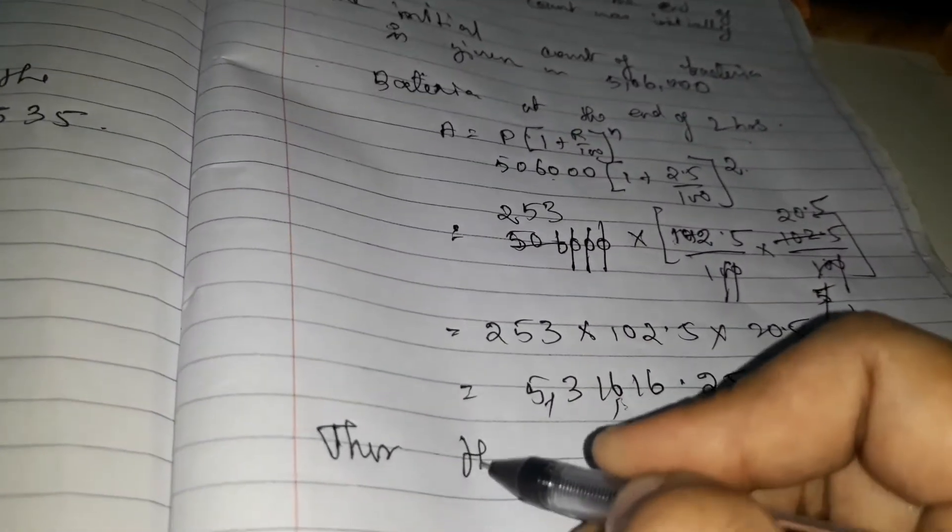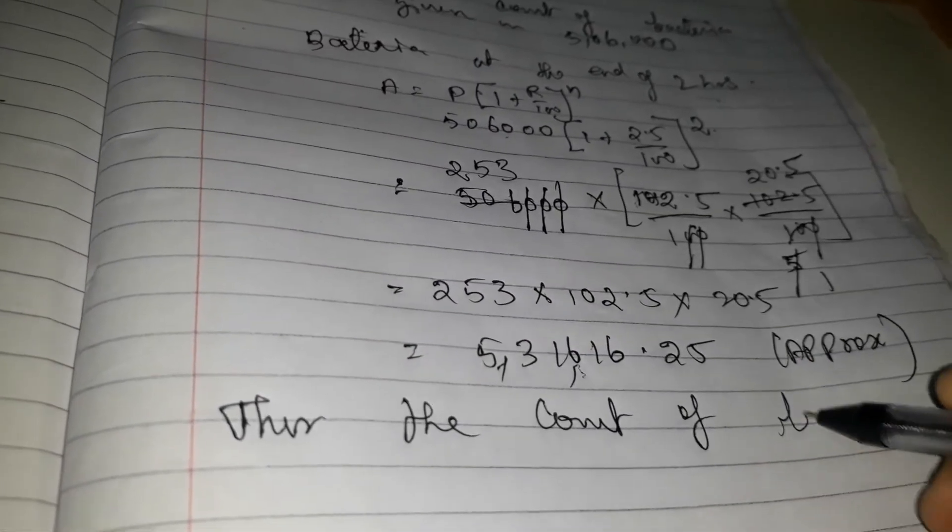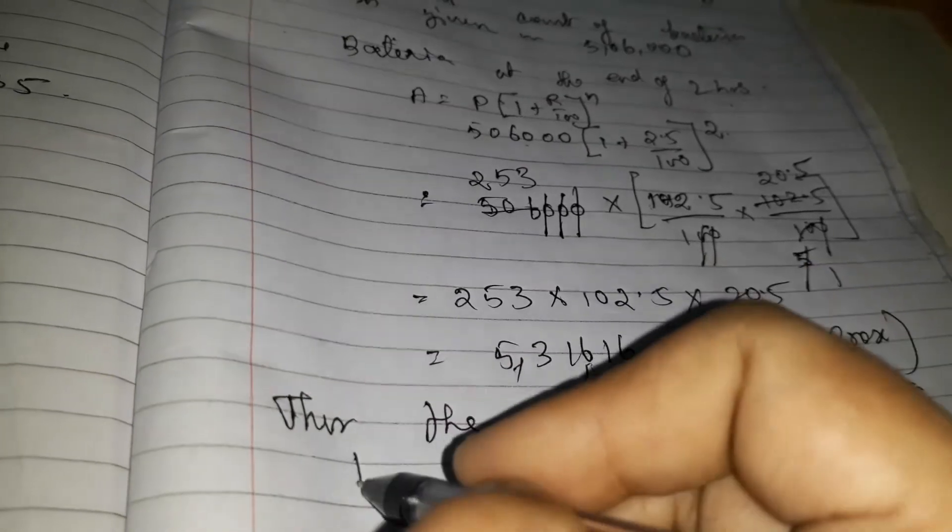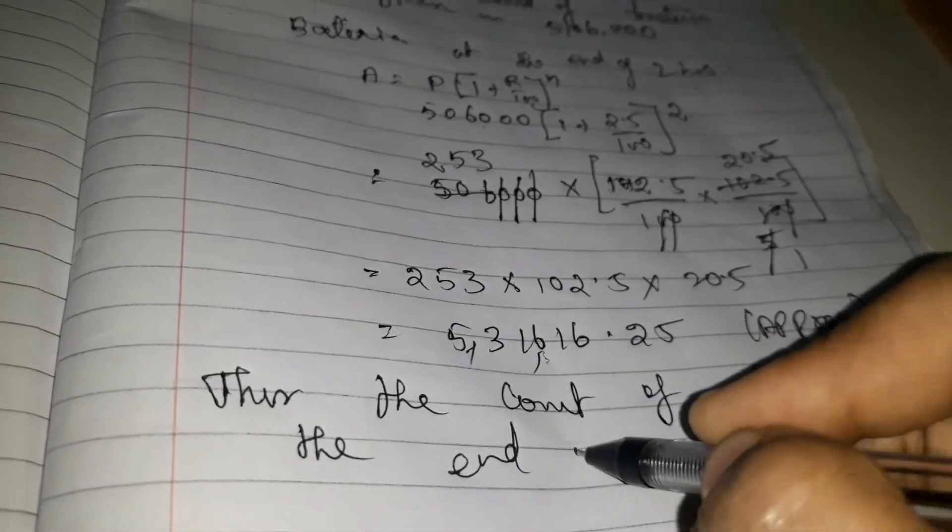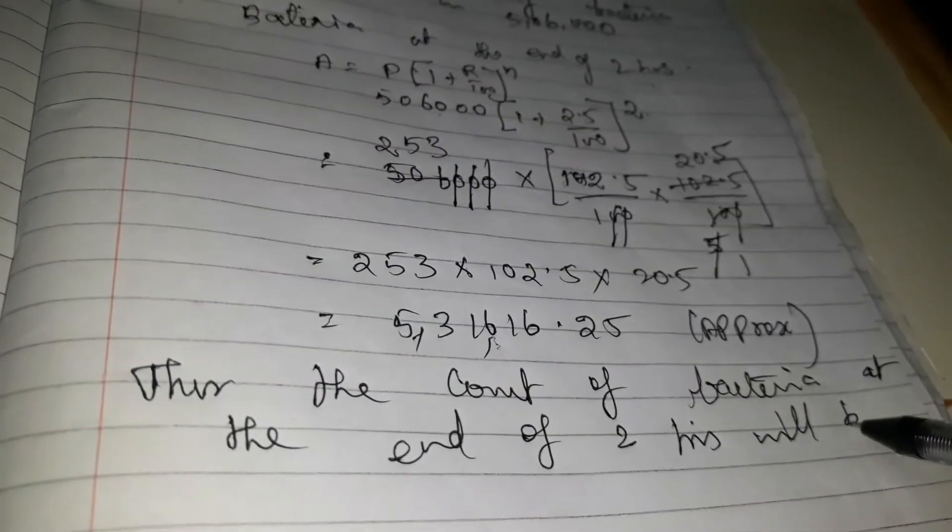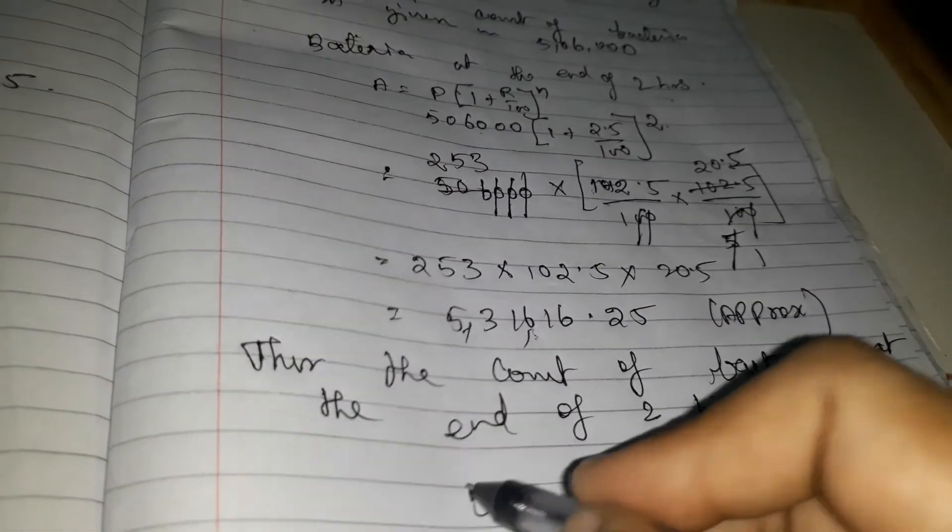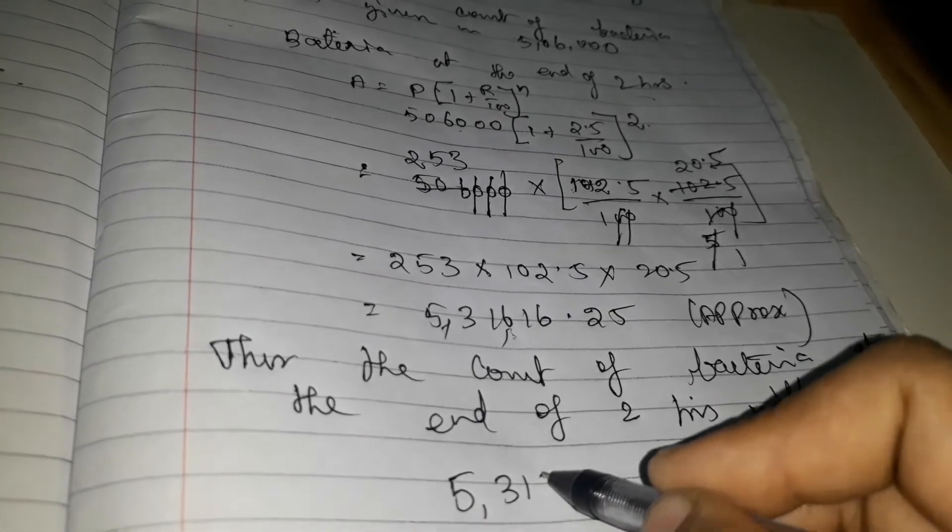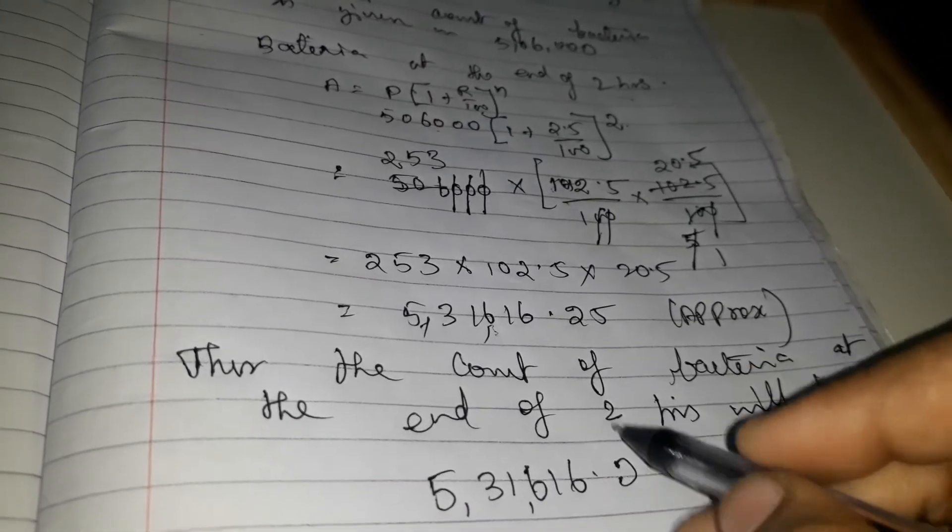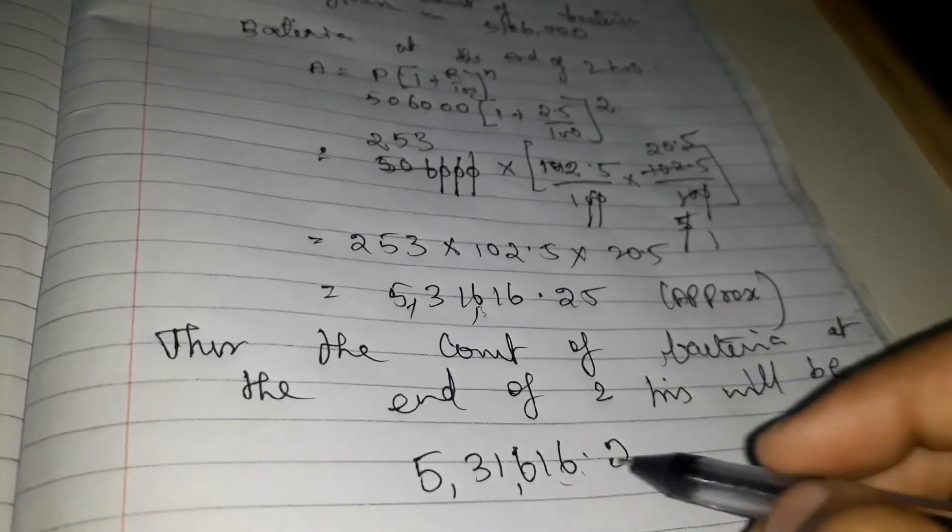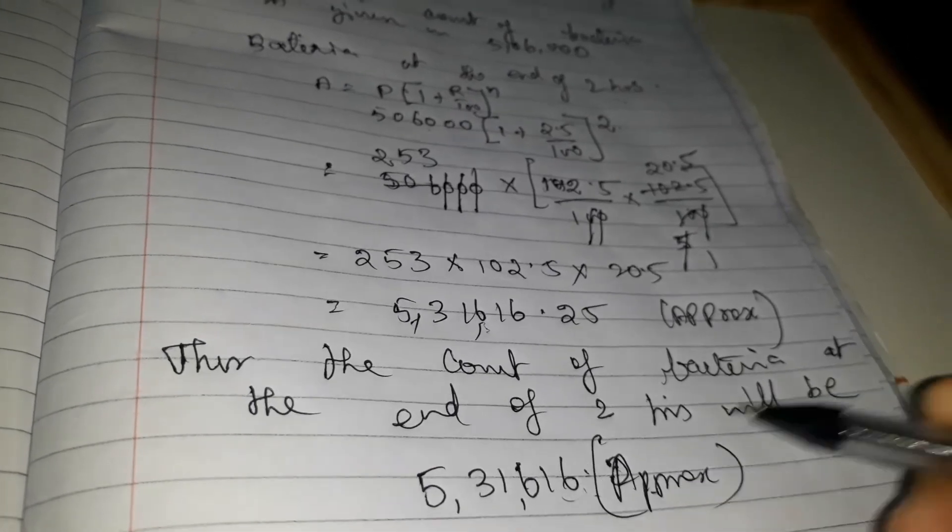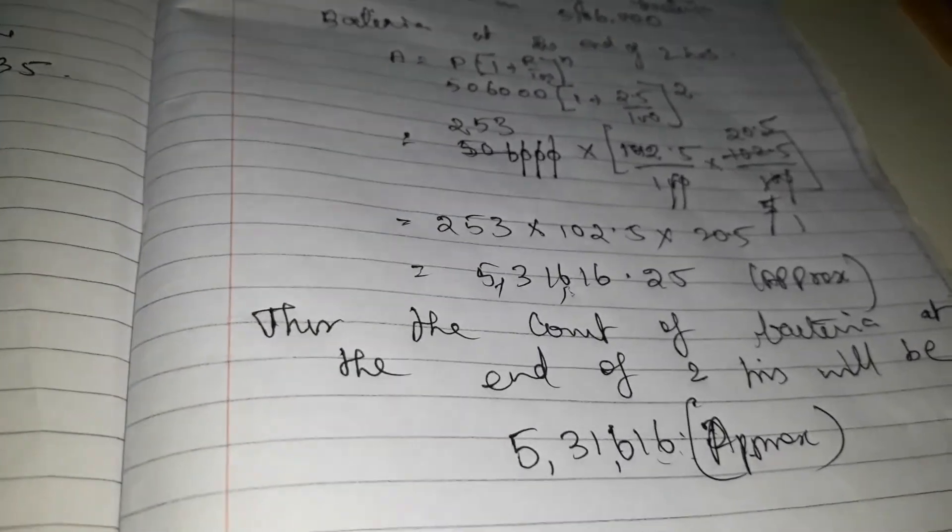Thus the count of bacteria at the end of 2 hours will be 5,31,616.16, so approximately. That's all. Thank you.